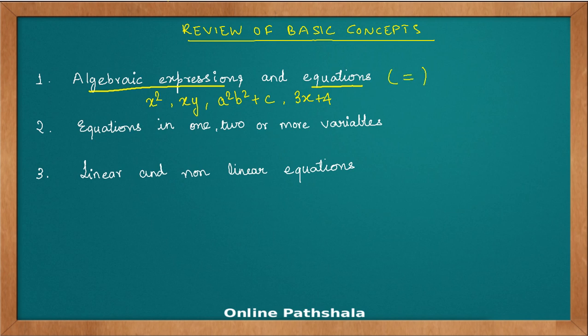If I were to change 3x plus 4 equals 1, then this becomes an equation. So this is a basic difference between an expression and an equation. What do we mean by equations in one variable, two variable, or more variables? Let us look at some specific examples.